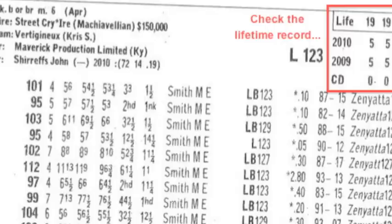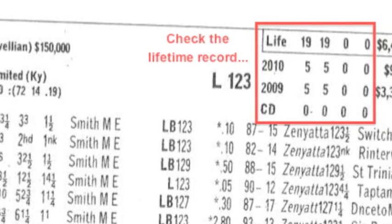The next thing we're going to talk about is the horse's lifetime record. When you're handicapping, you're trying to narrow down to one horse — we're trying to find the winner of the race. We want to pick a horse that shows he knows how to win. In the upper right-hand part of the past performance, as you can see, is the horse's lifetime record. We want to see the horse is winning at about 20% — one out of five races. So if the horse has had 10 lifetime races, we want to see at least two wins.